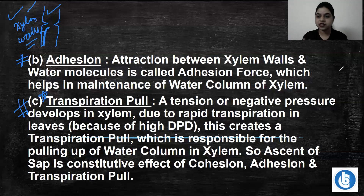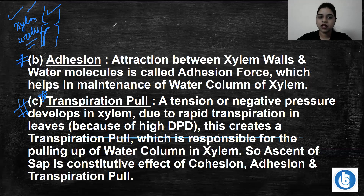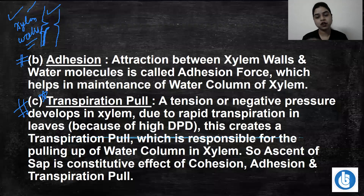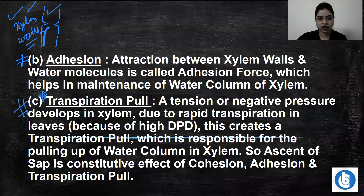This is how cohesion, adhesion, and transpiration pull work in coordination. The whole process is the ascent of sap. People say it is a tough topic, but if you are able to relate one component to the other and the second to the third, these things become very easy.